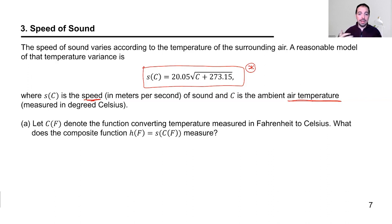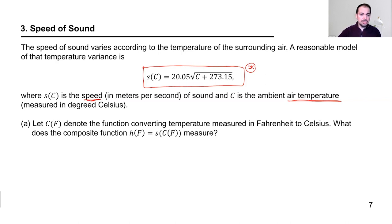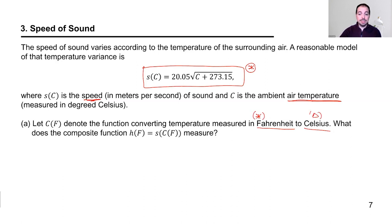The question introduces C of F, the function converting temperature from Fahrenheit to Celsius. If you live in the United States, you're more accustomed to Fahrenheit; in Europe, Celsius. We can convert between the two — it's actually a linear function. So here's the question: what does the composite function H of F equal to S of C of F measure?